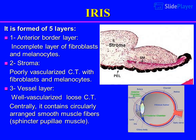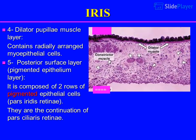Iris: it is formed of five layers. 1. Anterior border layer: an incomplete layer of fibroblasts and melanocytes. 2. Stroma: poorly vascularized connective tissue with fibroblasts and melanocytes. 3. Vessel layer: well-vascularized loose connective tissue; centrally it contains circularly arranged smooth muscle fibers — the sphincter pupillae muscle. 4. Dilator pupillae muscle layer: contains radially arranged myoepithelial cells. 5. Posterior surface layer: pigmented epithelium composed of two rows of pigmented epithelial cells, the pars iridis retinae, which are the continuation of the pars ciliaris retinae.